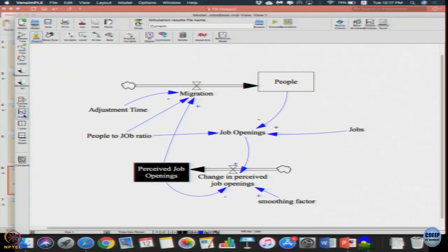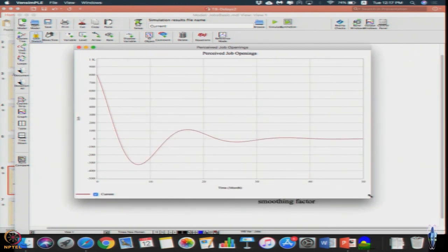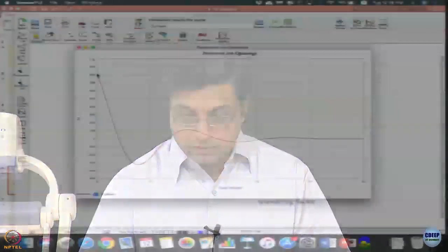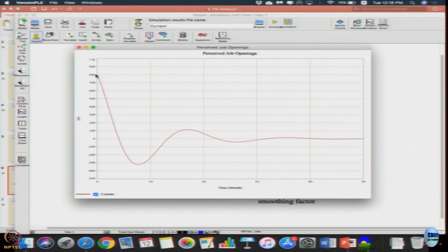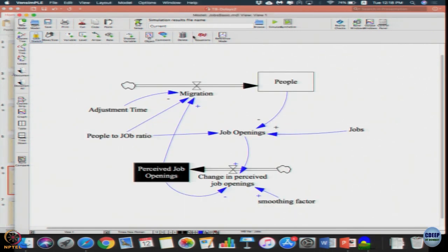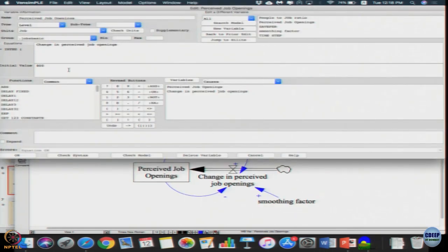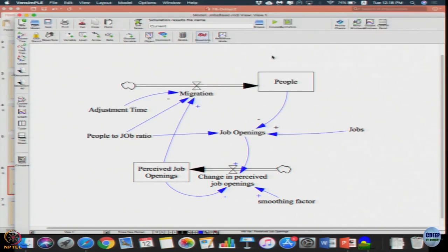The perceived job openings are still fluctuating in this case. If it has only a first-order delay, then from initial value of perceived job opening was 1000. Was it 800? Let us make the perceived job openings 0. Let us assume there is no jobs initially. Now let me simulate it again.